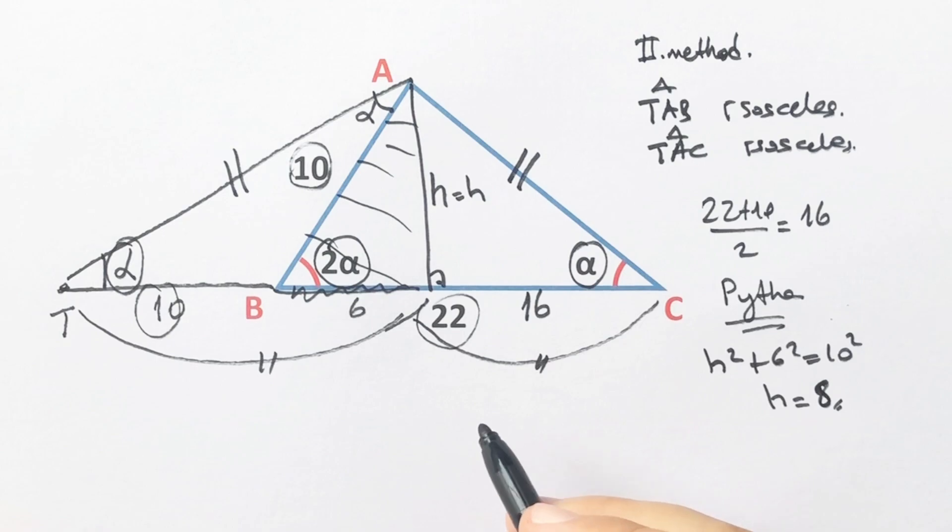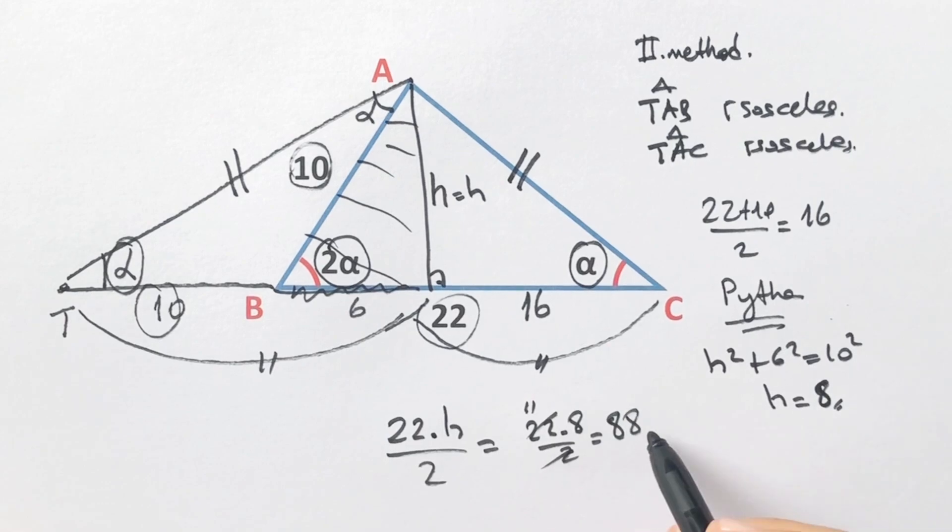Now we can calculate the area of this triangle easily. The area equals half of the base and height. Therefore the area is going to be 88 unit squared. Thanks for watching. If you want more videos like this, please subscribe my channel.